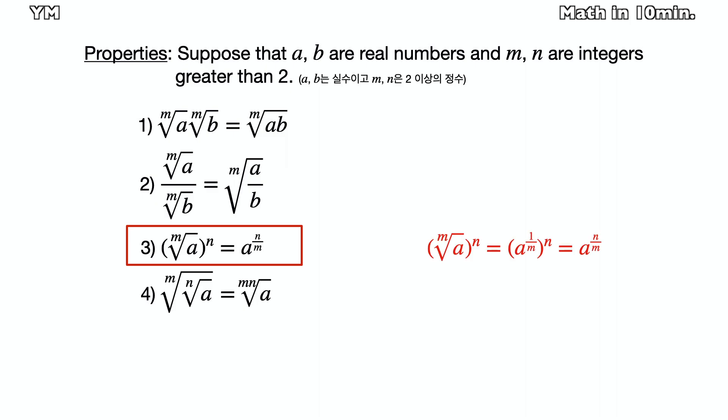Third, nth root of a to the power of n equals to a to the power of n over m. Fourth, nth root of nth root of a equals to mnth root of a.